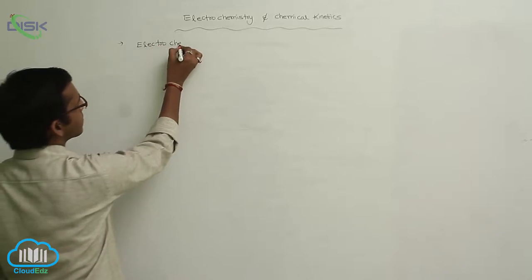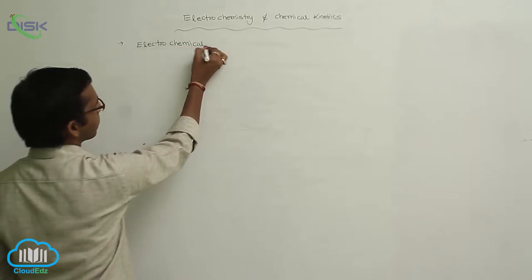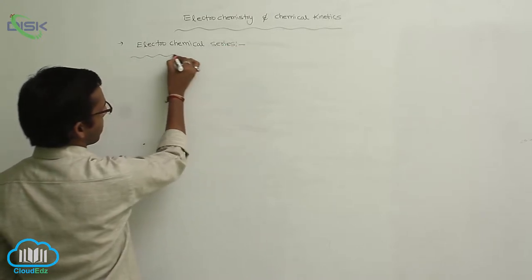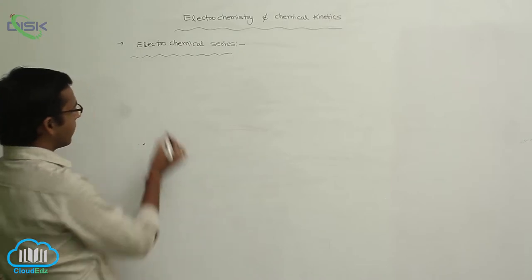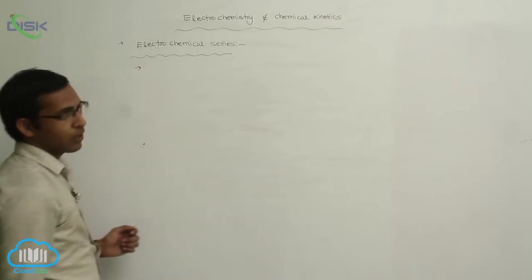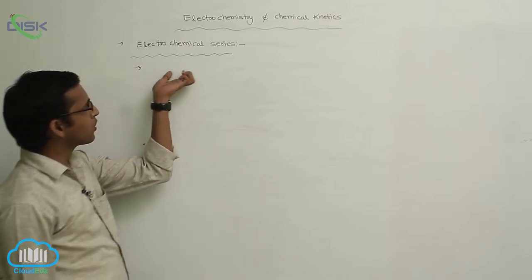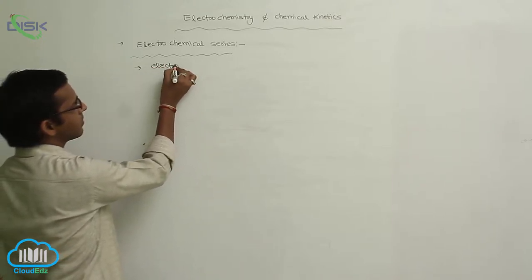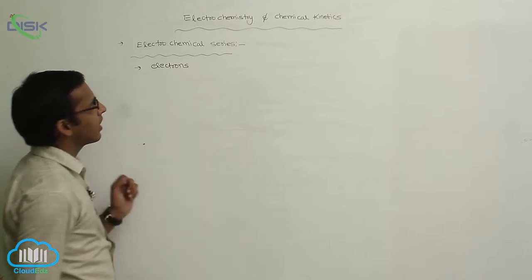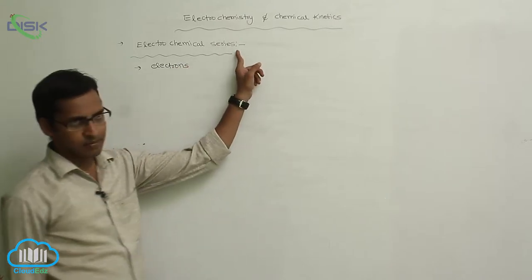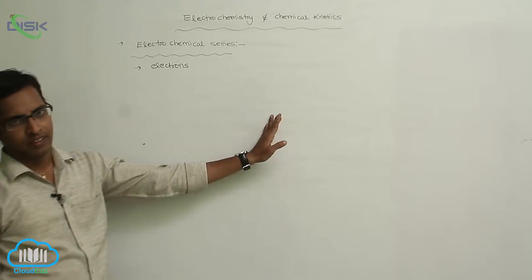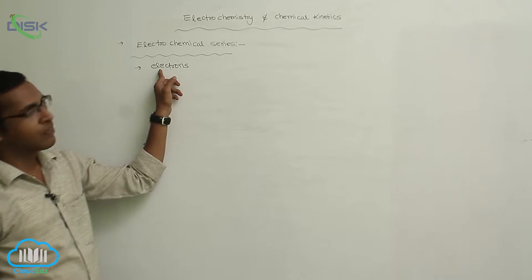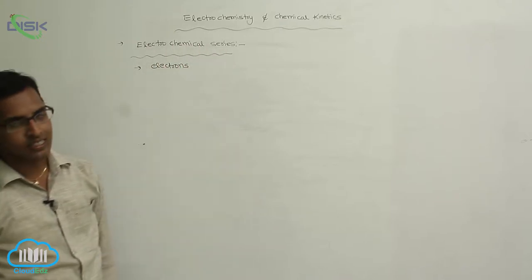Electrochemical series is the arrangement of electrode potential — the arrangement of various metals by decreasing tendency of donating electrons is called the electrochemical series.